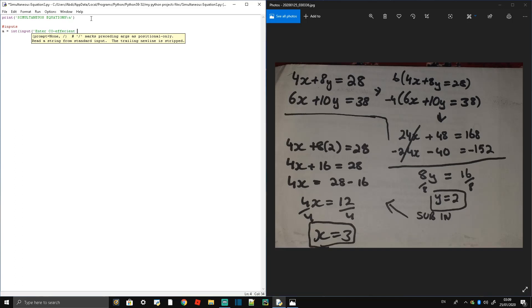To simplify it down, we're going to break each equation into three parts. I'll take the first equation: 4x plus 8y equals 28. It's going to be broken down to three parts: 4x, plus 8y, and equals 28.